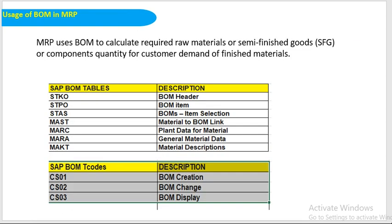Here are the key tables used for BOM in SAP: STKO is the BOM header, STPO is the BOM item, STAS is the BOM item selection, MAST is the material-to-BOM link, MARC is the plant data for material, MARA is general material data, and MAKT is for material description. The first four tables — STKO, STPO, STAS, MAST — are especially important for BOM header data, item data, item selection, and material-to-BOM link.